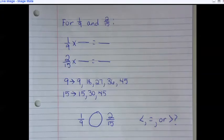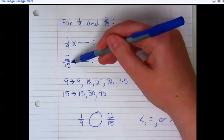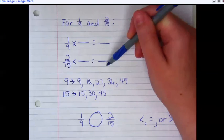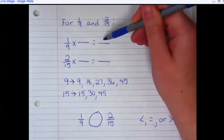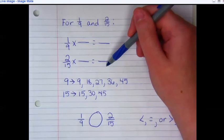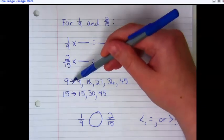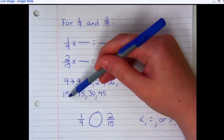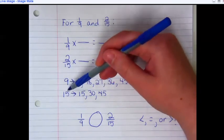Here are my notes for 1/9 and 2/15. So that I can compare these fractions, I need to have the least common denominator, or the same denominator, and then I can compare the numerators. To find the least common denominator, I actually need to look at the least common multiple.